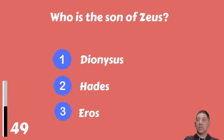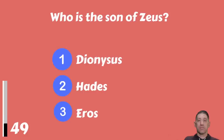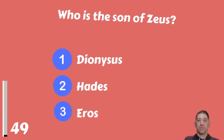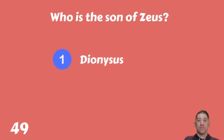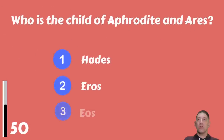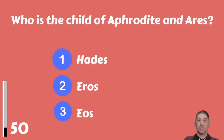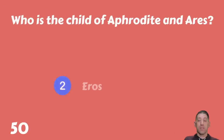Who is the son of Zeus — Dionysus, Hades, or Eros? And who is the child of Aphrodite and Ares — Hades, Eros, or Eos? The answer is Eros.